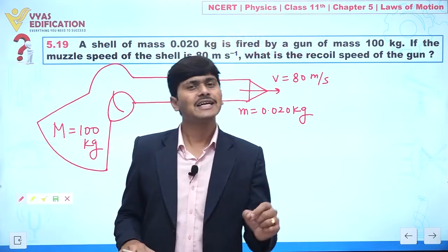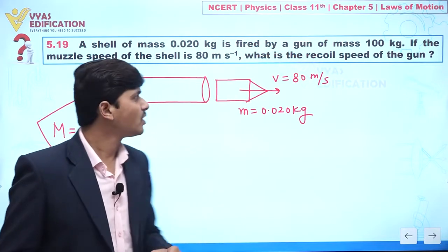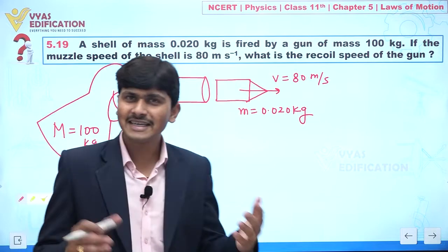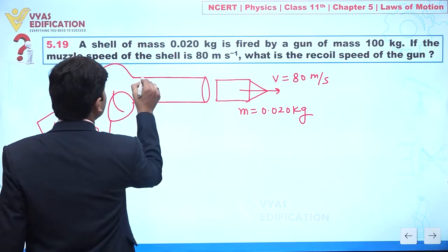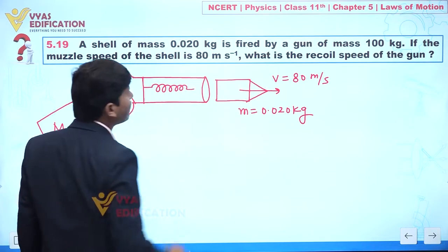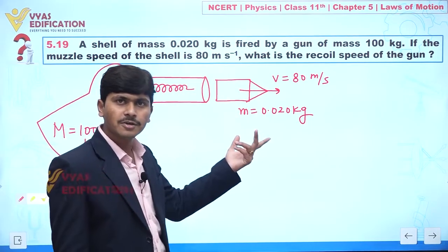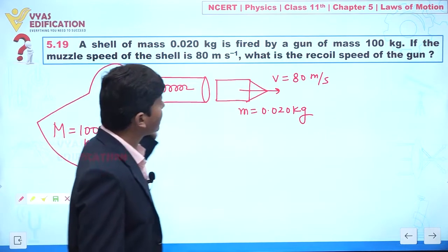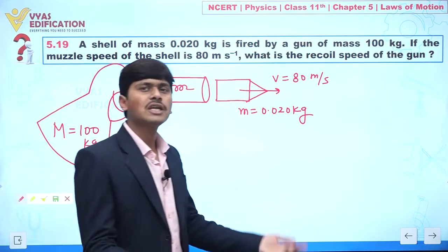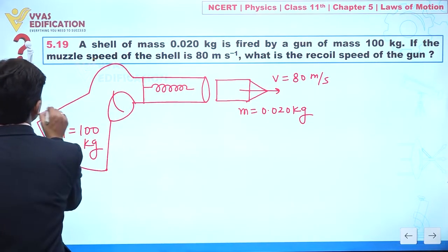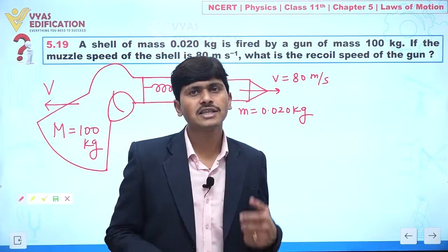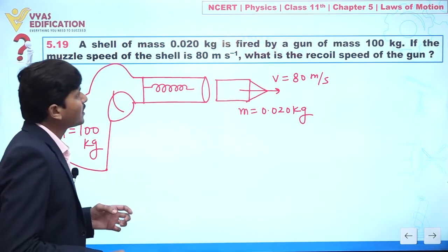If we are assuming the shell's motion as action, there is definitely a reaction in the opposite direction. We can imagine a spring exerting force on the shell. So logically, the recoil velocity of the gun, V, acts in the opposite direction to the shell.